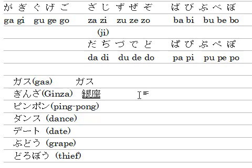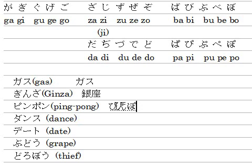Ginza becomes kanji — like this. The next example is P-I-N-P-O-N (ピンポン). Type P-I-N-N, P-O-N-N, hit the space key — there it is.